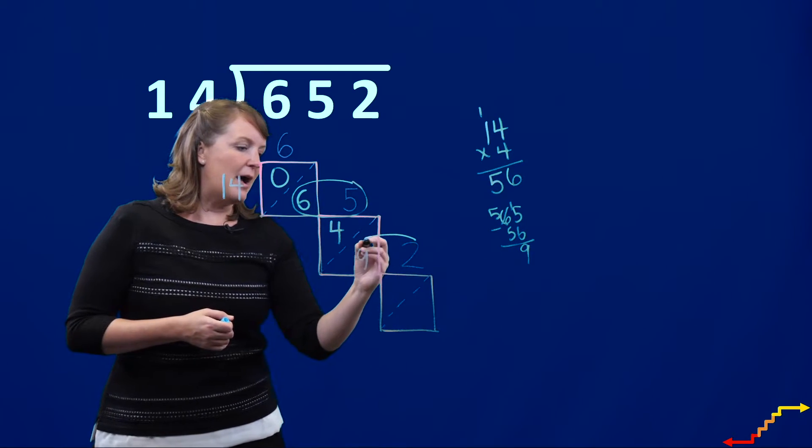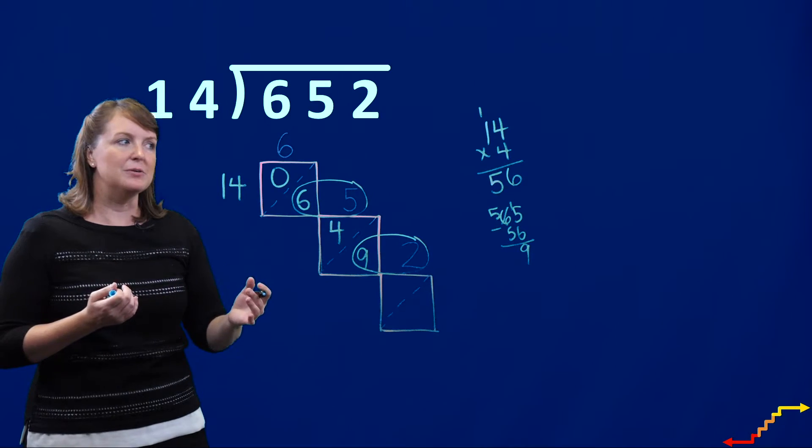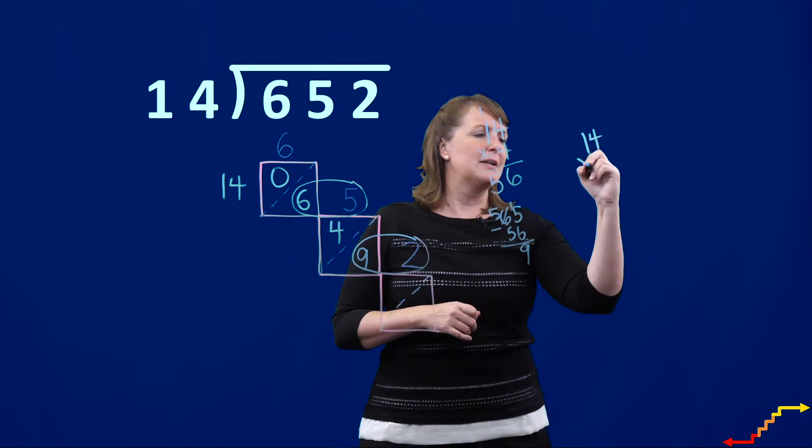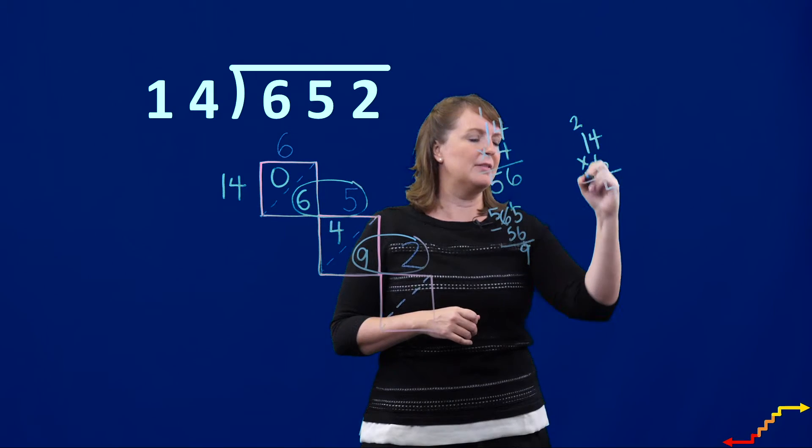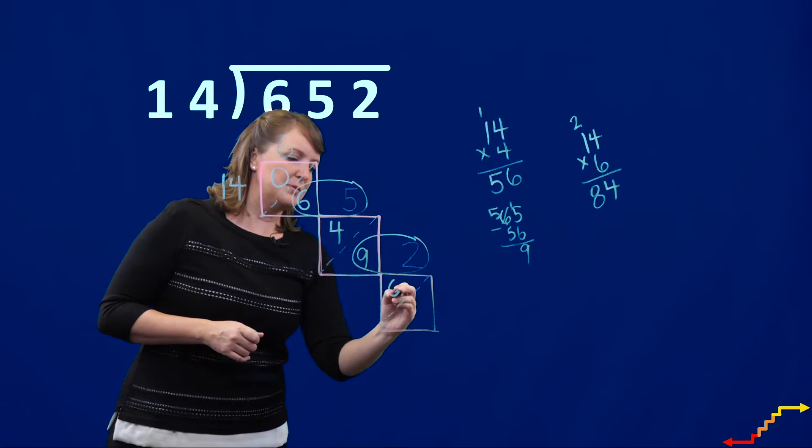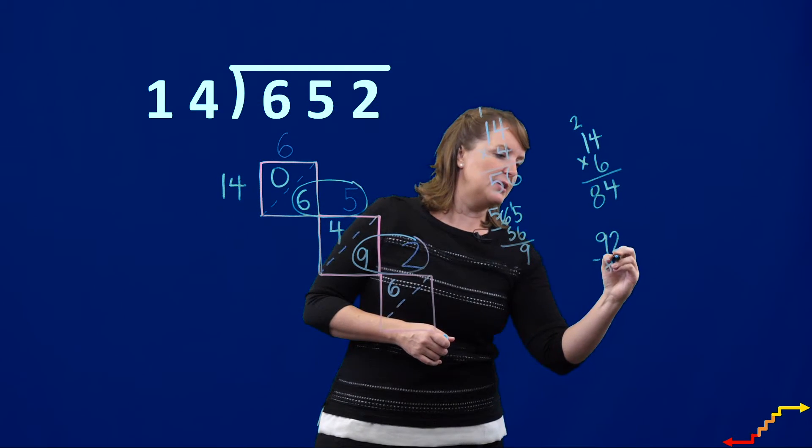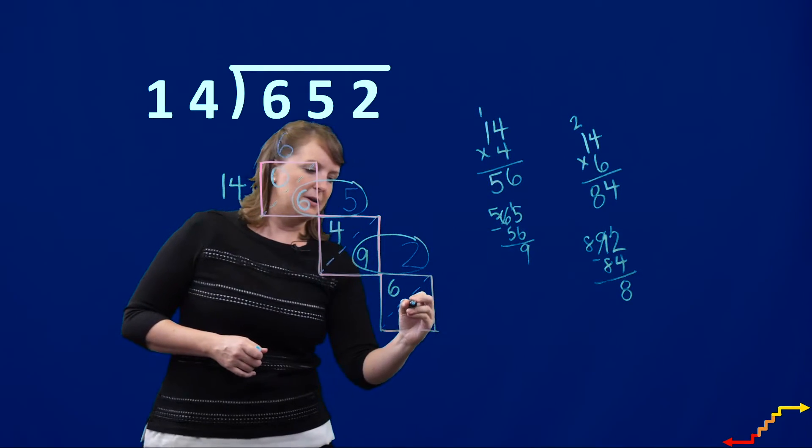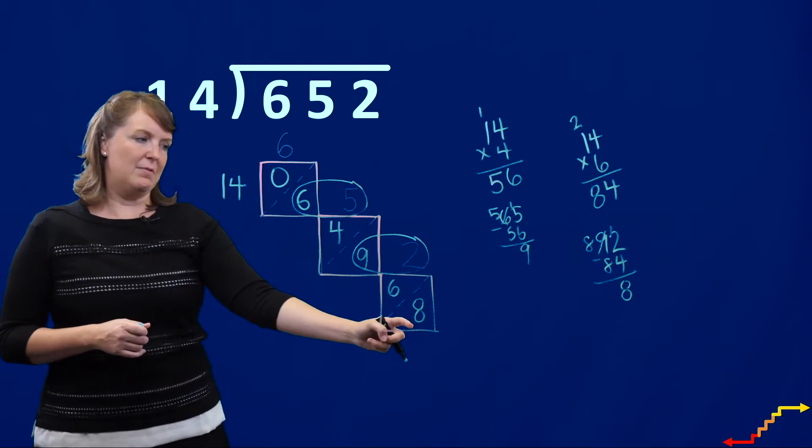Now I have to think about how many groups of 14 can I make if I have 92? Again, I'm going to go over here to my side and do some math. I'm going to guess that I might be able to make six or seven groups. Let me check my math here. Oh, yes, I can definitely make six groups. And then if I have 92 subtracted by 84, then I have eight remaining. So I made six full groups of 14 and I have eight remaining.